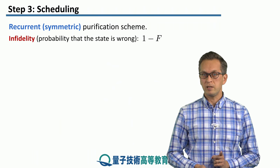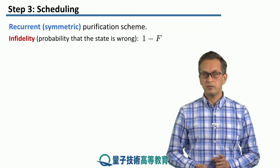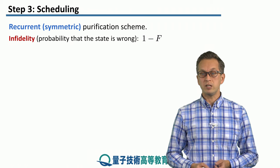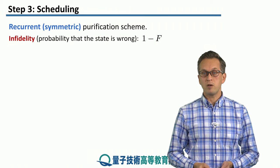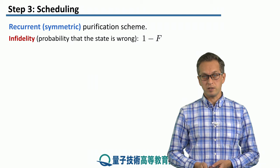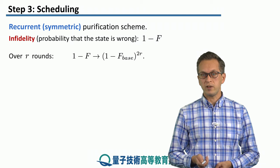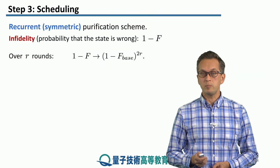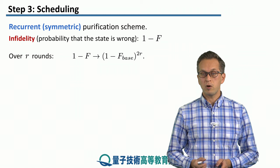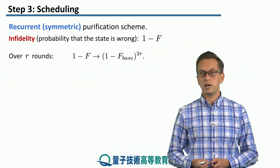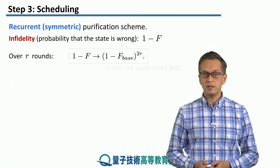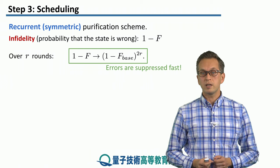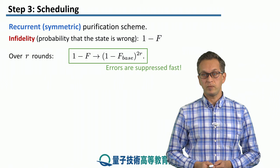But let's consider what happens to the infidelity of the state. The infidelity is the probability that the state is wrong, and is given as one minus the fidelity of the state. Over r rounds, the infidelity scales as follows: it's (one minus the base fidelity) to the power of two times r. Meaning that the errors in our noisy state get suppressed very fast, which is good.